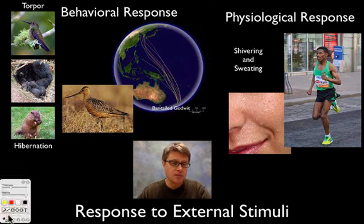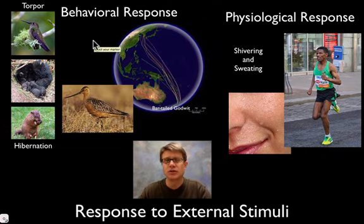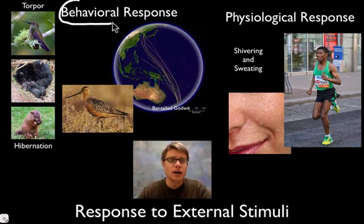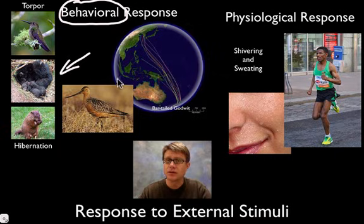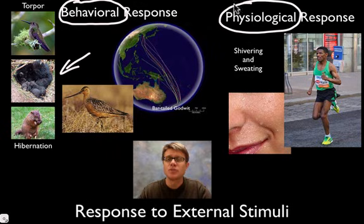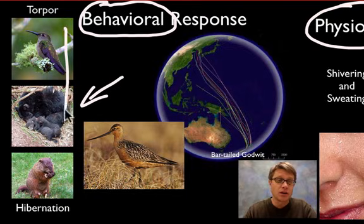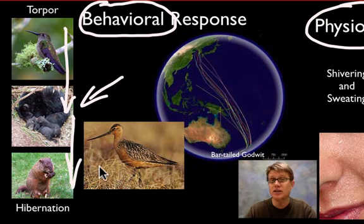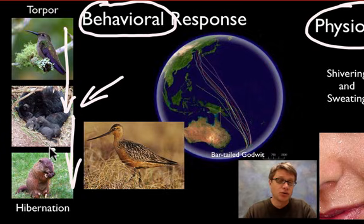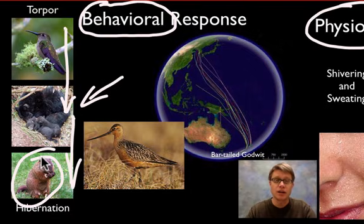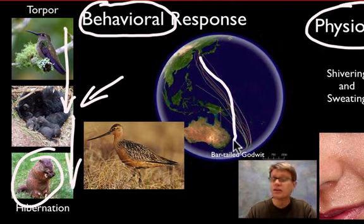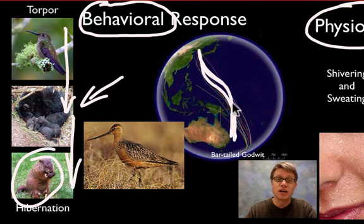Let's define a couple of other terms: behavioral and physiological response. A behavioral response refers to the whole organism responding. For example, when it gets colder, some organisms like a hummingbird will undergo torpor, some will hibernate, and some are true hibernators — you could knock them on a table and they wouldn't wake up. Migration is another behavioral response; the whole organism flies to the southern hemisphere as the weather changes.